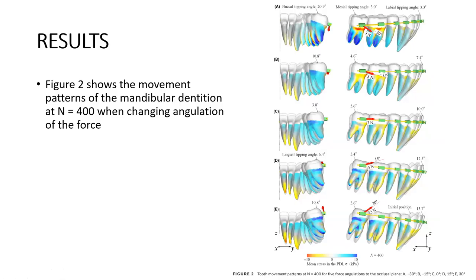For results, when force angulation was minus 30 degrees, buccal tipping was 20.9 degrees. Buccal tipping of the molars gradually decreased as force angulation increased to plus 30 degrees, while mesial tipping and labial tipping gradually increased from minus 30 to plus 30 degrees. At minus 30 degrees there is buccal tipping of the first molar, but at plus 30 degrees the molars are lingually tipped.